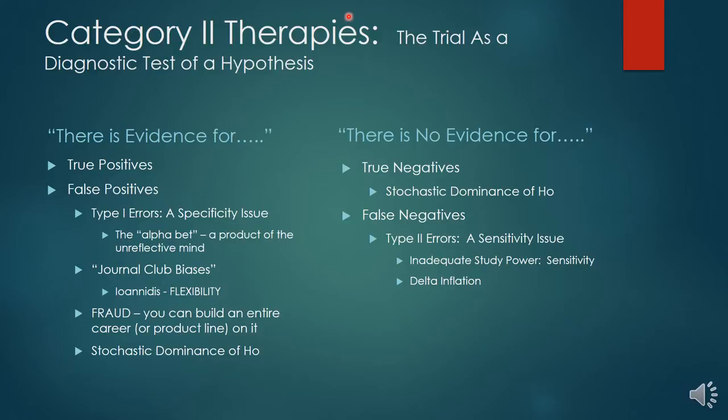False positives can arise from type one errors — essentially a specificity issue — from the many biases discussed in journal clubs: trials stopped early for benefit, single-center trials, lack of blinded adjudication, post hoc adjustments, protocol adjustments, and so on. What Ioannidis calls 'flexibility' — any flexibility in the design, conduct, or analysis of the trial — allows conscious or unconscious biases of investigators to surface in the way data are recorded, generated, presented, or analyzed.